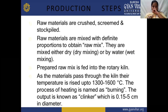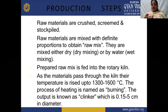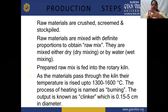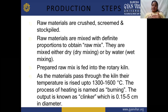The production steps: raw materials are crushed, screened, and stockpiled. Raw materials are mixed in definite proportions to obtain a raw mix. They are mixed either dry — called dry mixing — or with water, called wet mixing. Dry mixing means mixing directly without any addition of water, whereas wet mixing involves mixing raw materials in the presence of water to form a slurry.